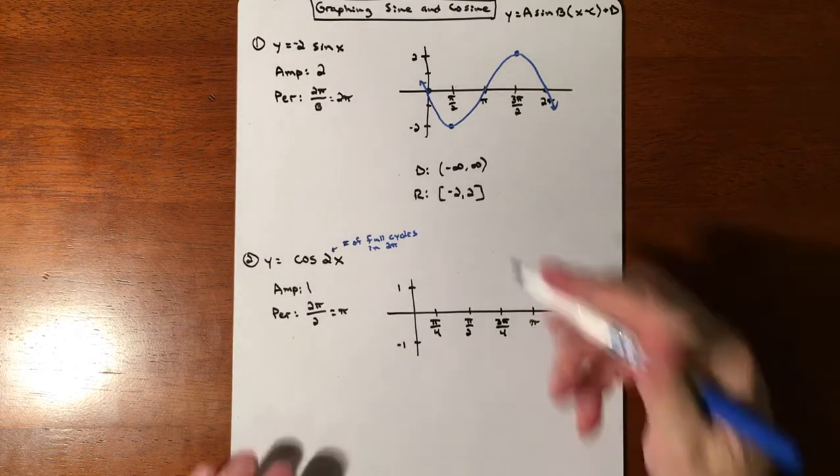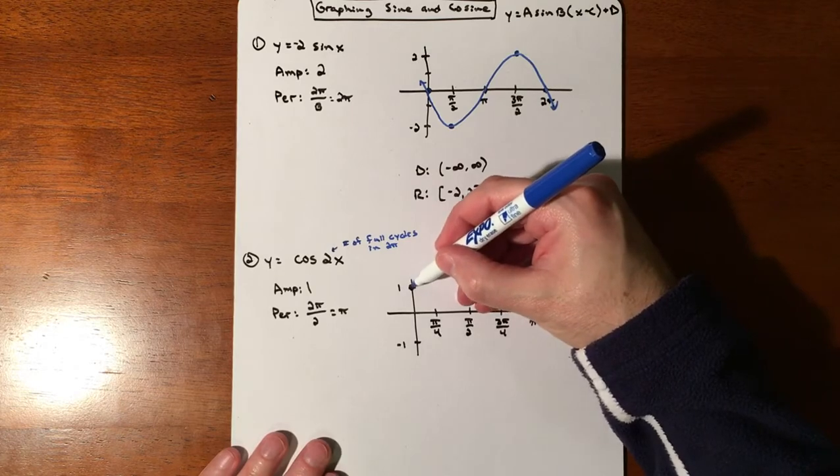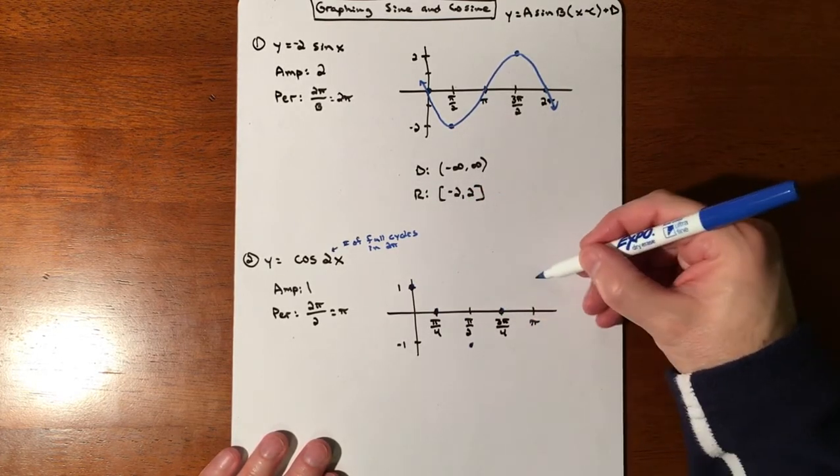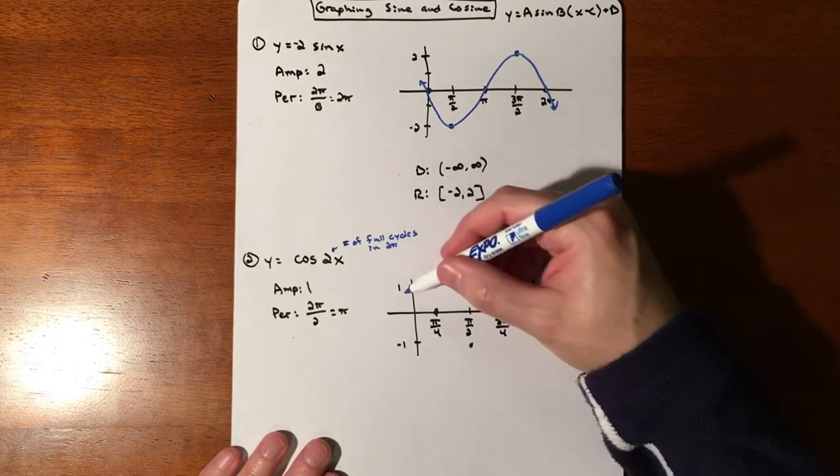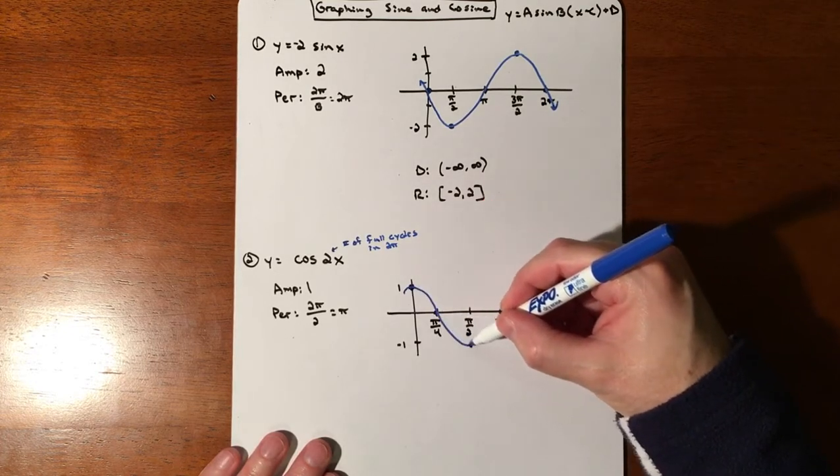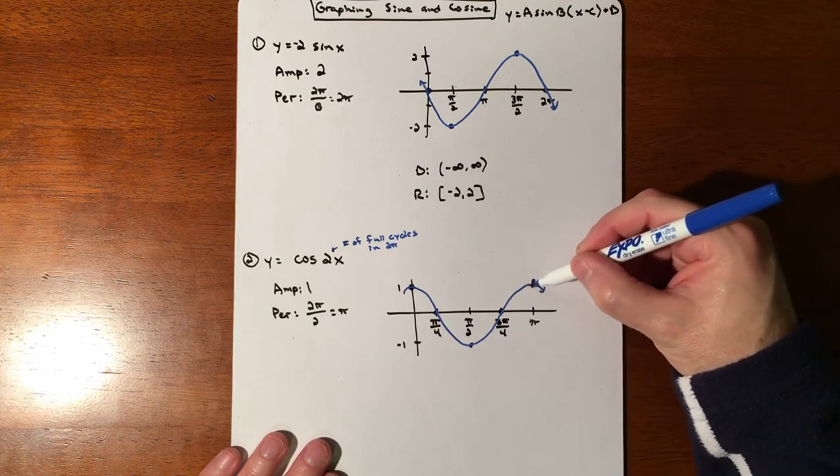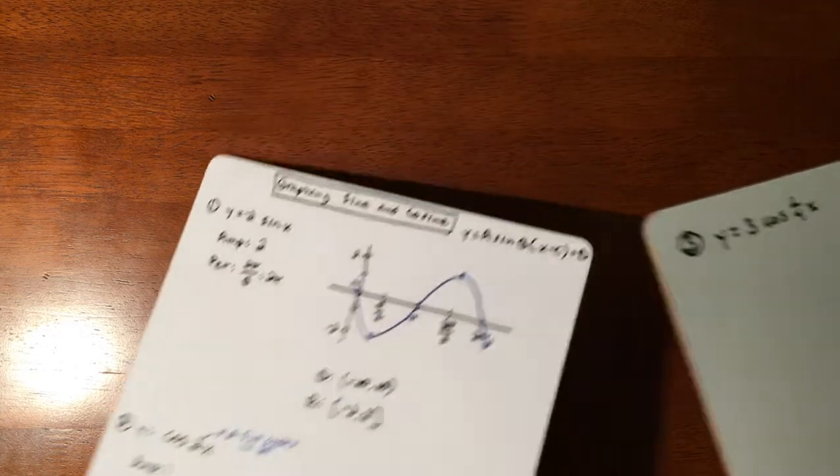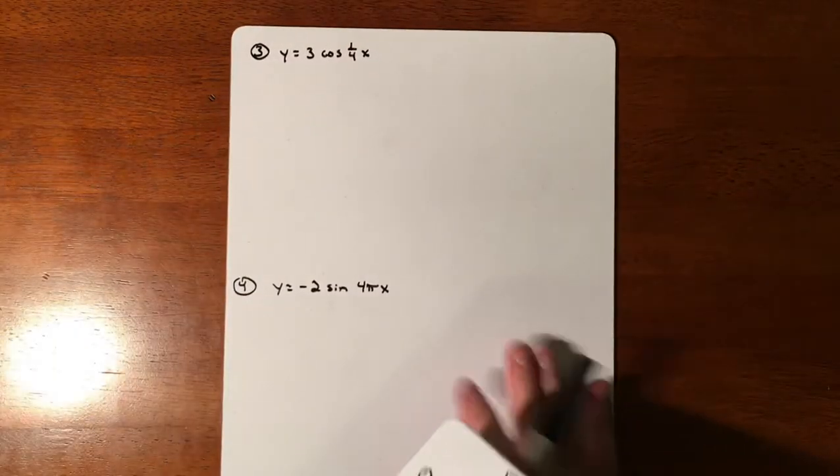And our graph is going to fluctuate between a negative 1 and a positive 1. Now graphing cosine: cosine starts at a high point, and then we're going to go to a middle, and then a low, a middle, and then a high. And there we go. So there's our cosine graph.